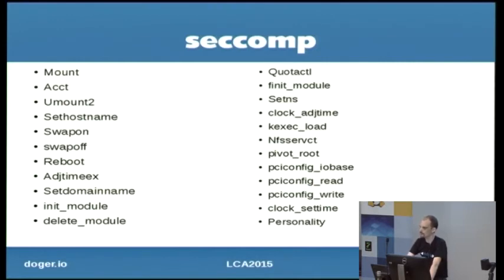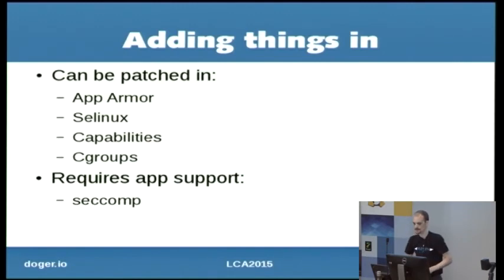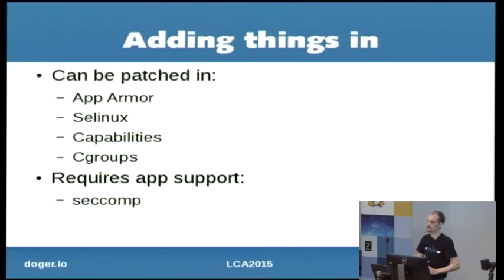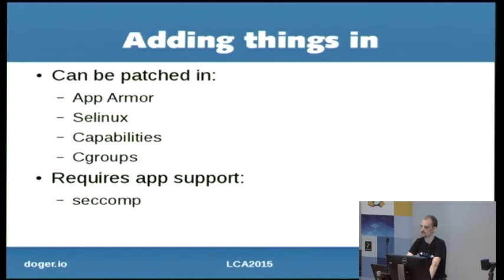SecComp does require you to compile and load a policy, which is why you need support from your container framework. The only one you really can't patch in after the fact is SecComp. It does give you quite a bit of extra security — there was a vulnerability in Econet back in 2010 where if you created a socket of type Econet and did the right things with it, you could gain root. SecComp would have allowed you to only create IPv4 or Unix sockets and protect against that. The rest of these security features can be patched in with a tiny bit of work if you want to secure an existing container solution.